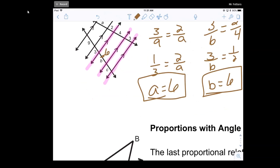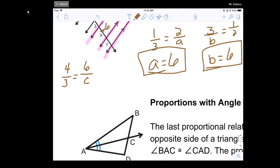So now I can say 4 over 3 is equal to 6 over C. And I can't reduce it, it's already reduced. So I have 4C is equal to 18.